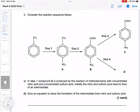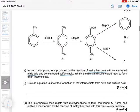Consider the reaction sequence below. In step one, compound A is produced by the reaction of methylbenzene with concentrated nitric acid and concentrated sulfuric acid. Initially, the nitric and sulfuric acid react to form an intermediate.